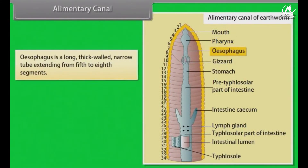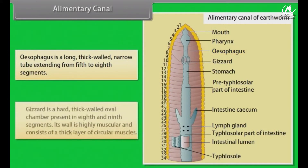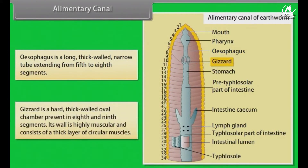The oesophagus is a long, thick-walled, narrow tube extending from the fifth to eighth segment. The gizzard is a hard, thick-walled oval chamber present in the eighth and ninth segments. Its wall is highly muscular and consists of a thick layer of circular muscles.